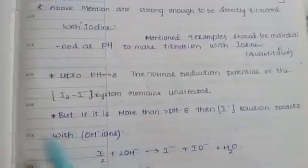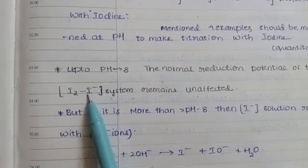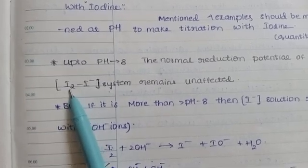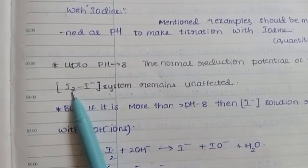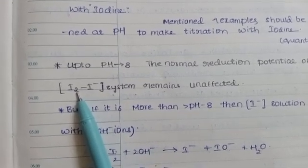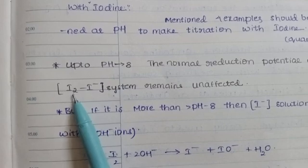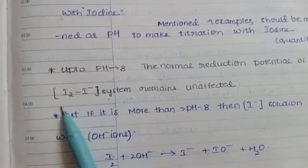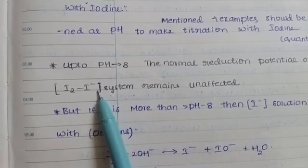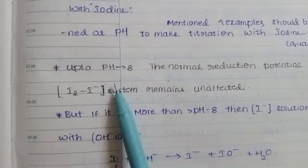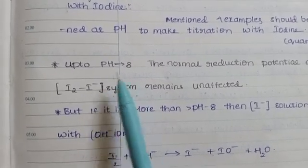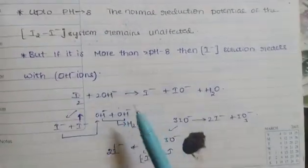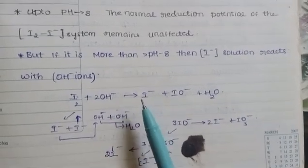This system is called the iodine solution system. If the pH is more than 8 and we use this reducing agent, the iodine solution reacts with OH- ions. We already know that OH- ions are alkaline and basic. This is the I2 and I- system. Iodine is in the burette.